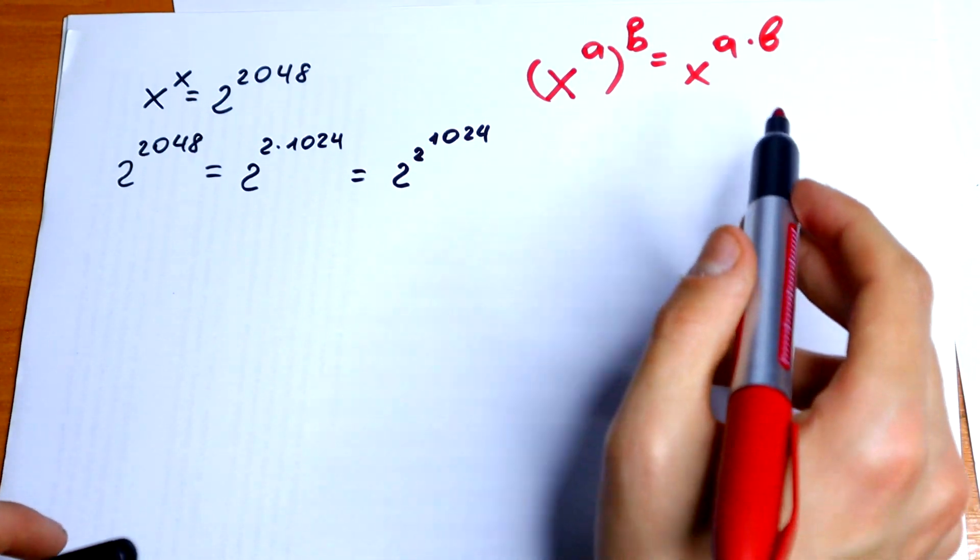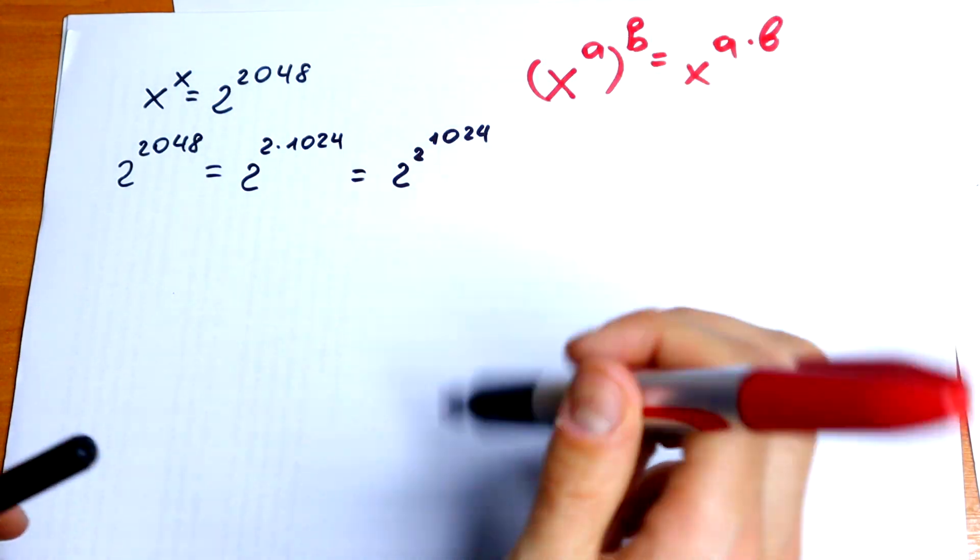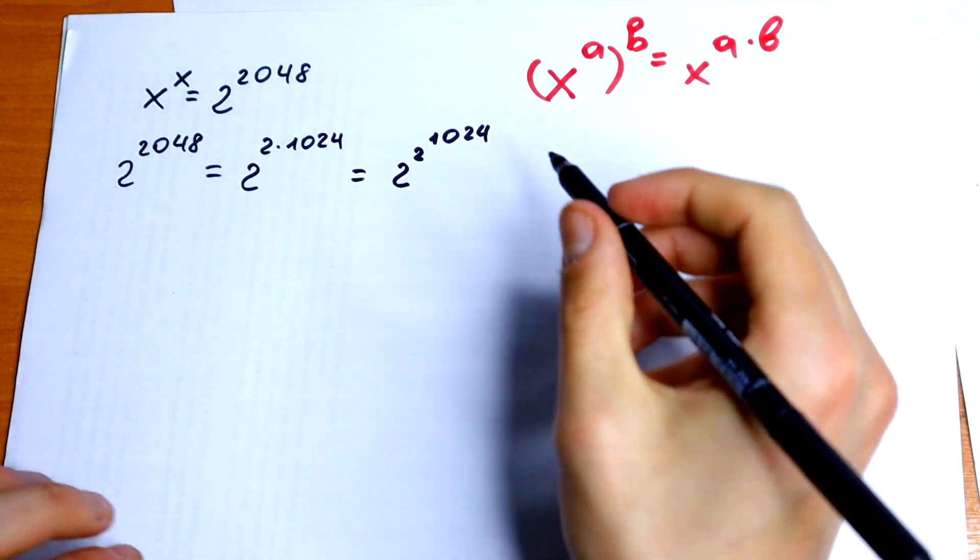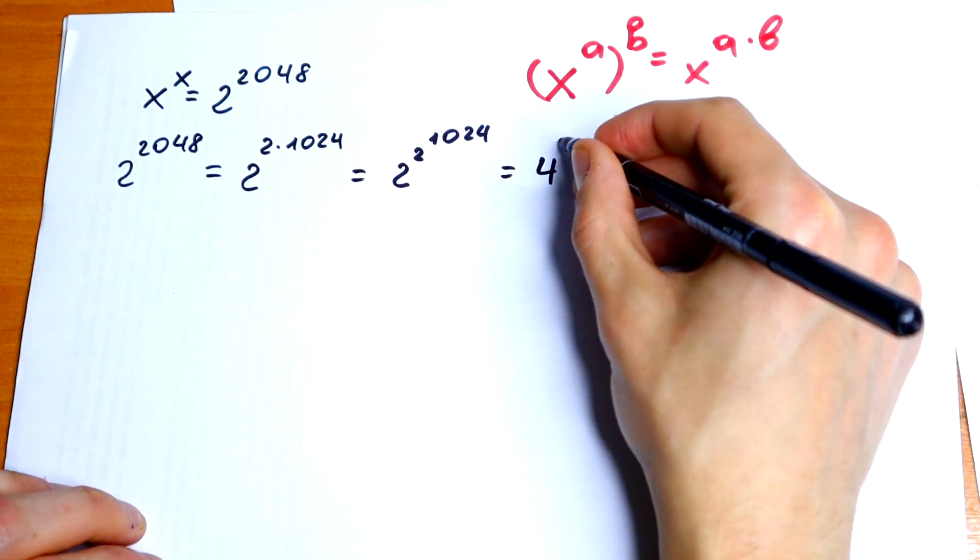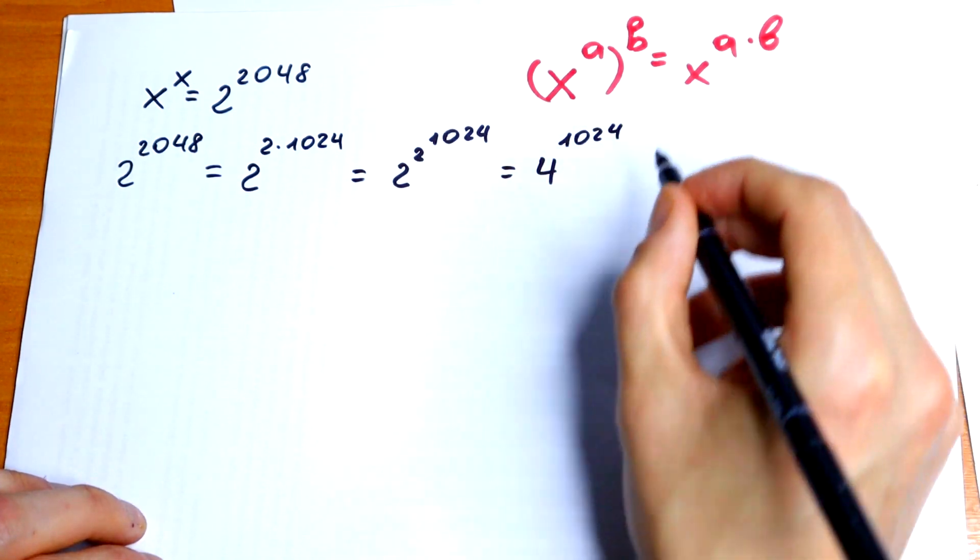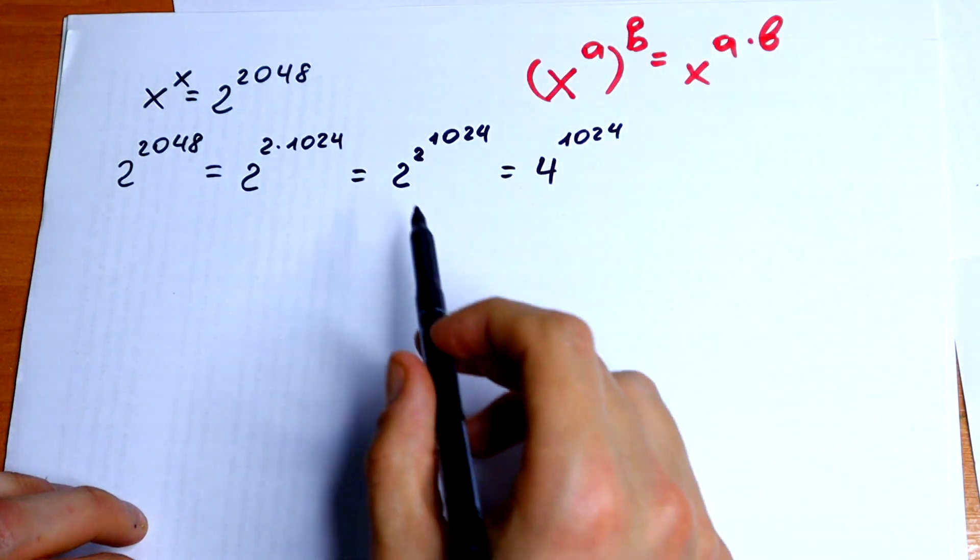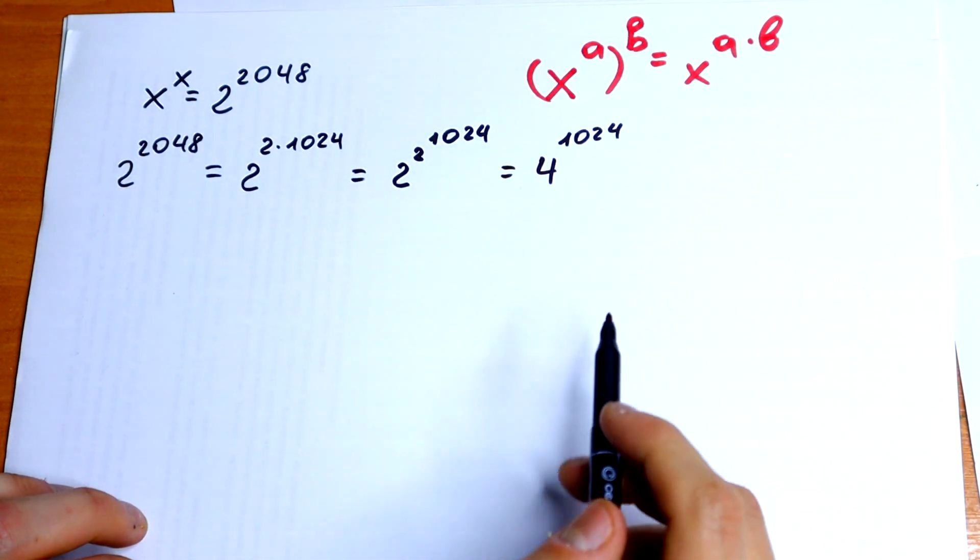And this works on the left and on the right side. So, 2 square equals 4 to the power 1024. Check this step and we will go next.